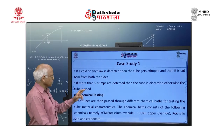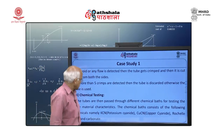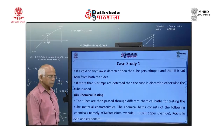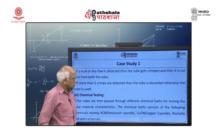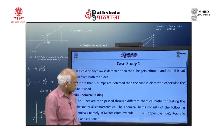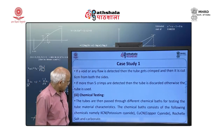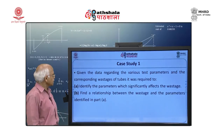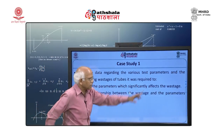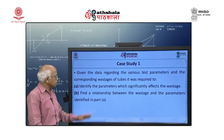The third testing is chemical testing. Tubes are passed through different chemical baths for testing tube material characteristics. The chemical baths consist of KCN (potassium cyanide), CuCN (copper cyanide), Rolla salt, and carbonate. Given the data regarding various test parameters and the corresponding wastages of tubes, it was required to identify the parameters which significantly affect the wastages and find a relationship between wastage and the identified parameters.